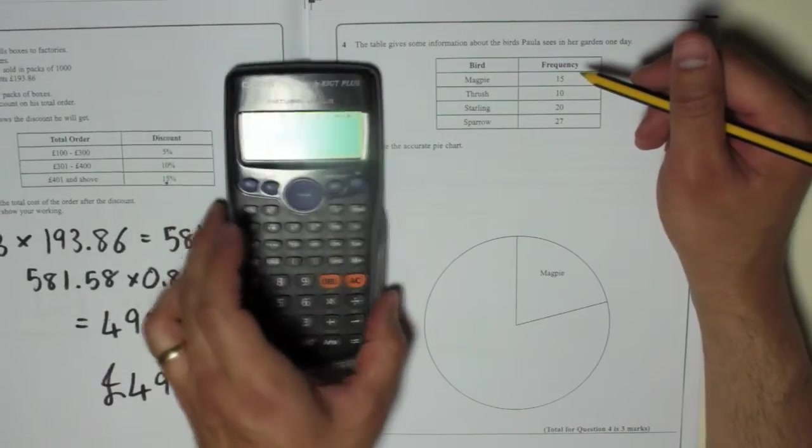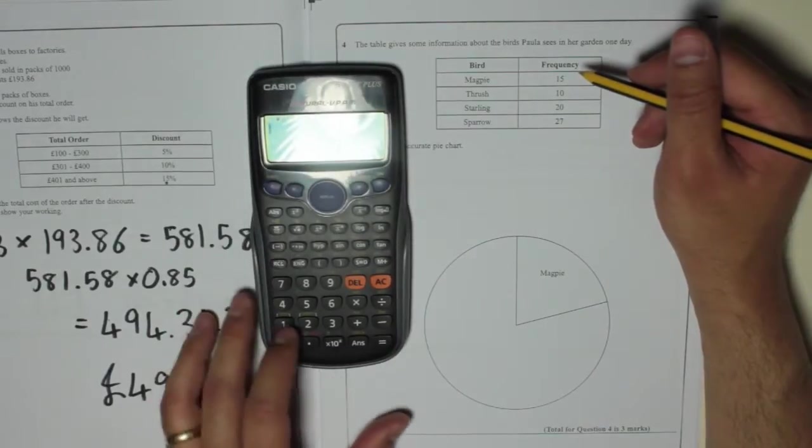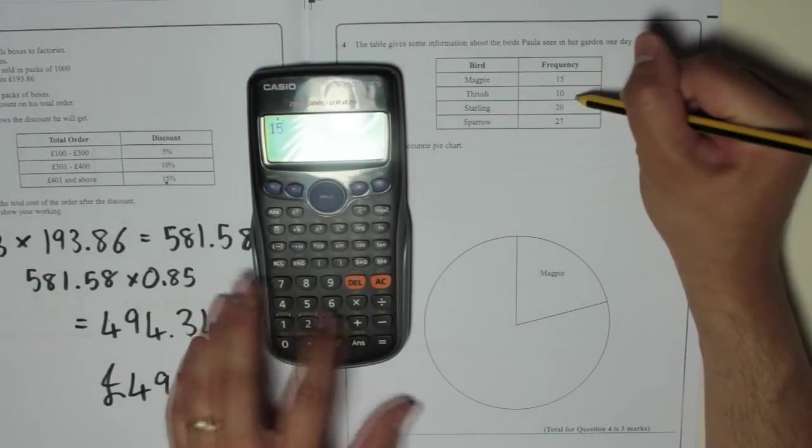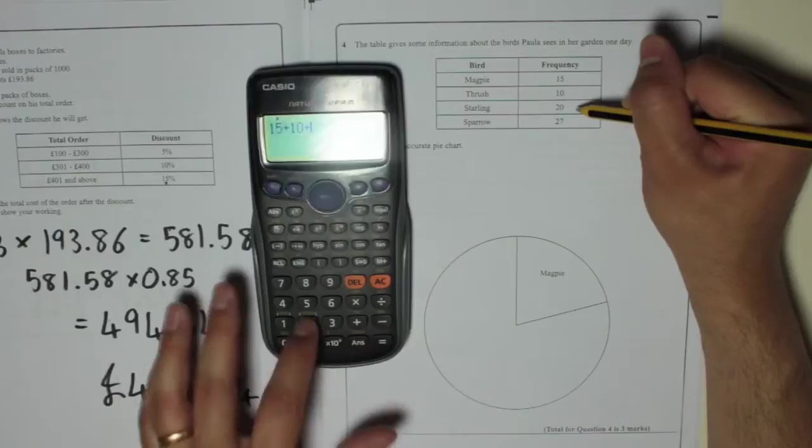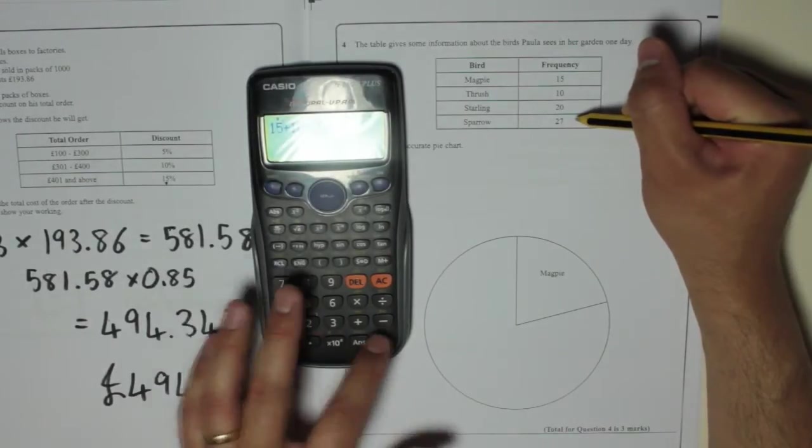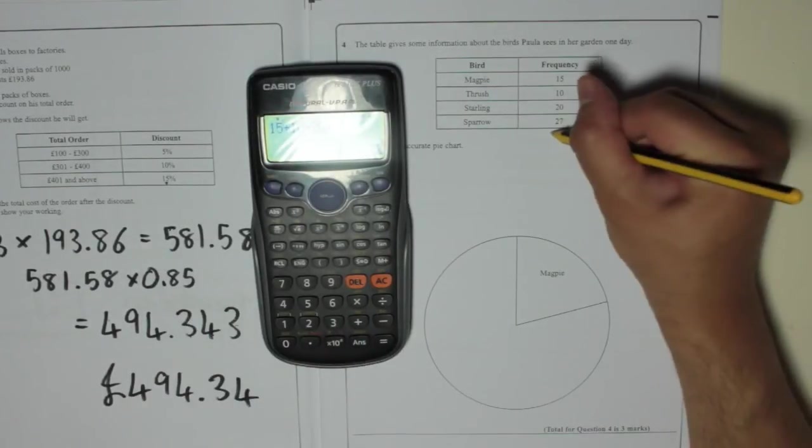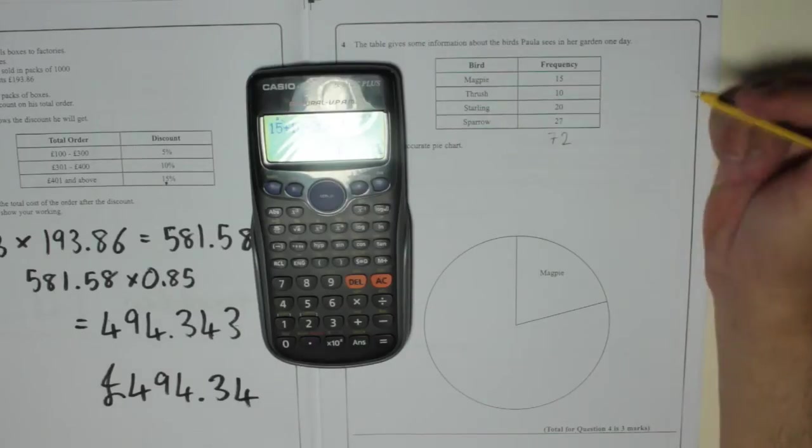You could do it in your head, but just in case you're going to make a mistake, let's do it on the calculator. So 15 plus 10 plus 20 plus 27 is 72, so 72 is the total number of birds.